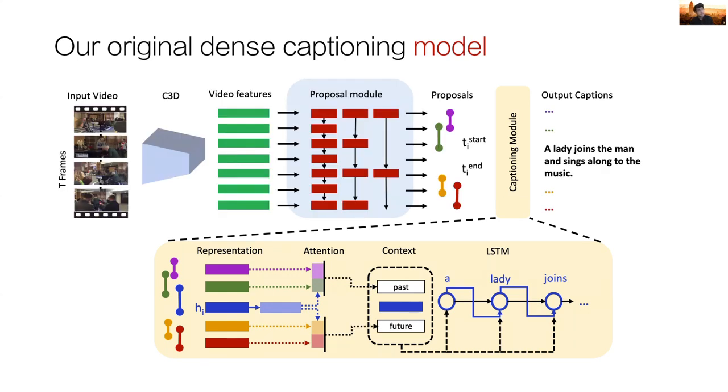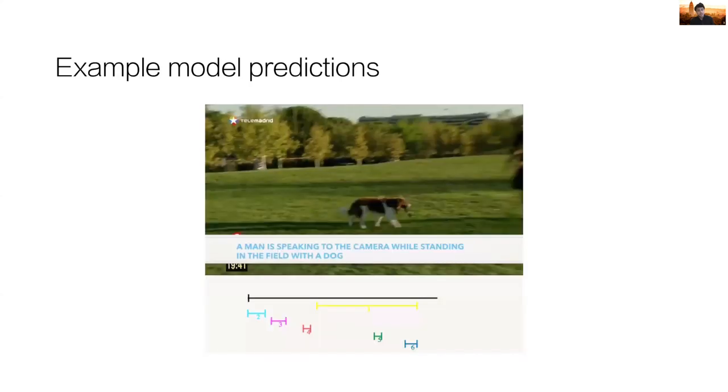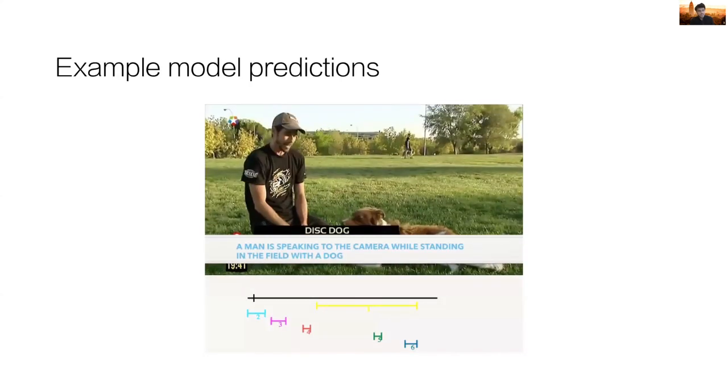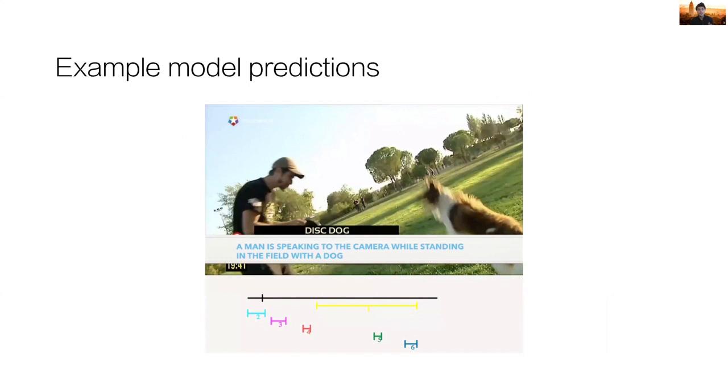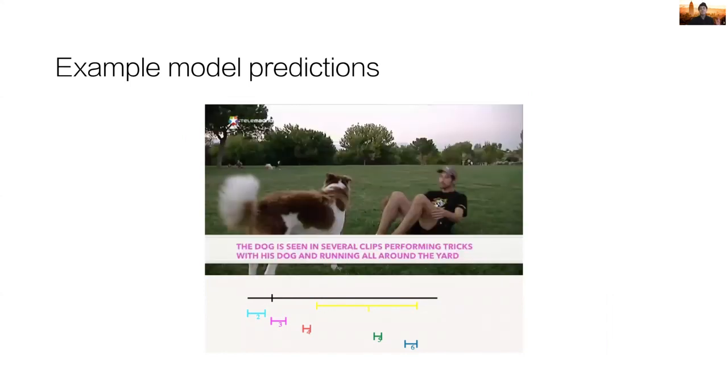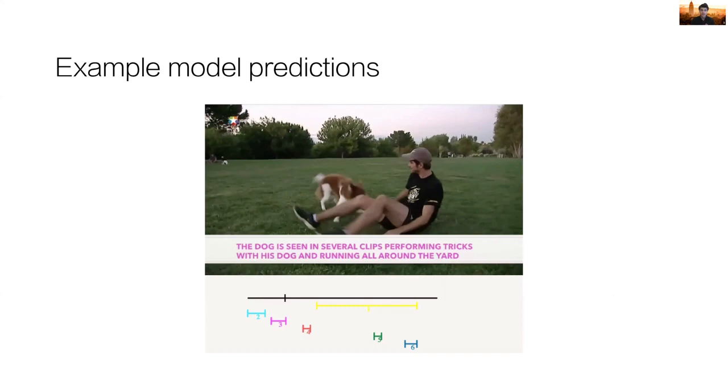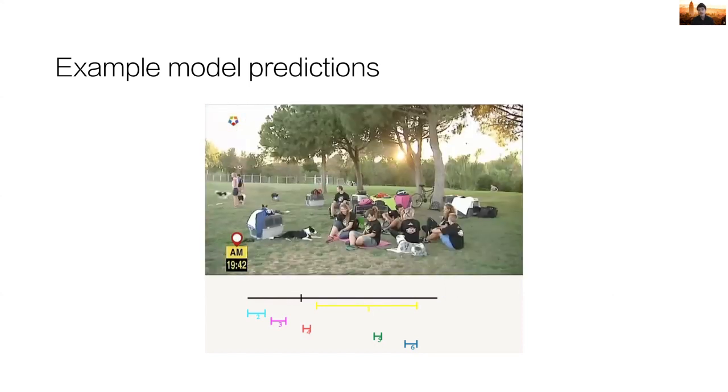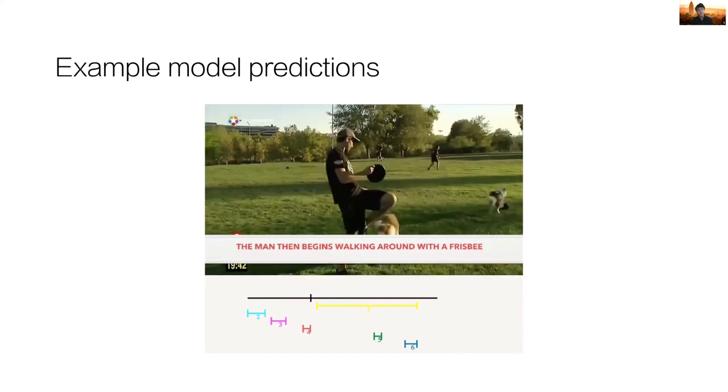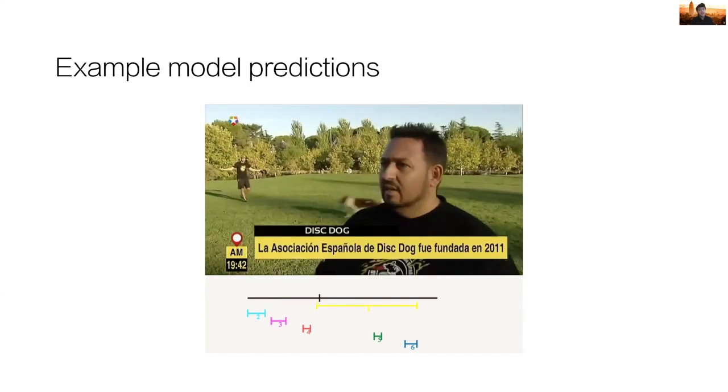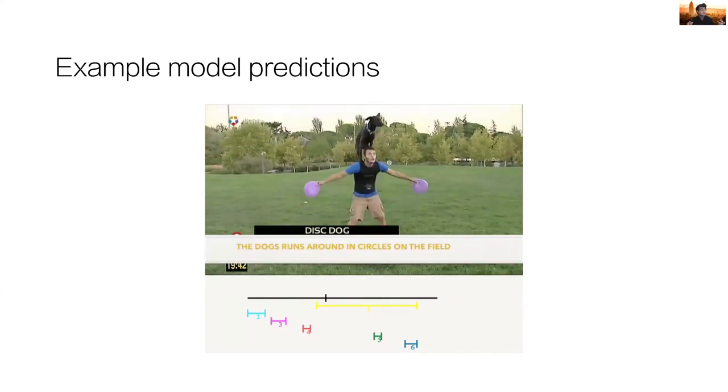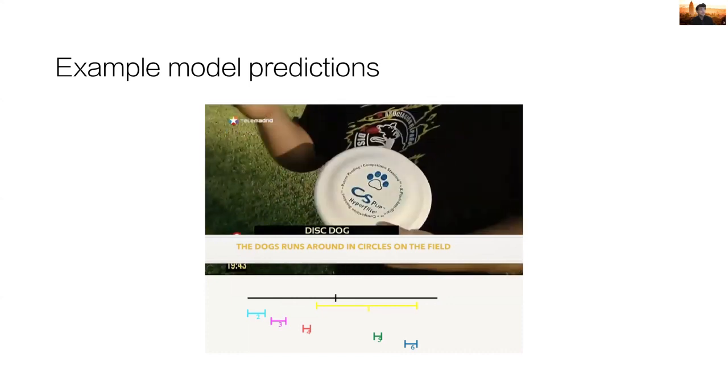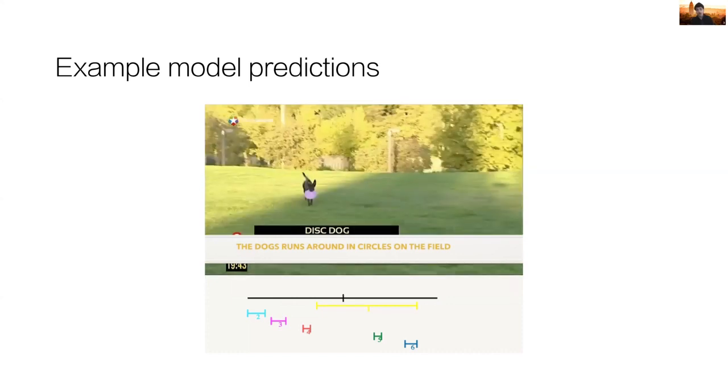So let's take a look at some example outputs. Here's an example which contains a series of shorter events followed by a much longer event that starts somewhere in the middle of the video. First, a man is speaking to the camera. Then the dog performs some tricks, and then finally the dog runs around in circles around the field for a while.